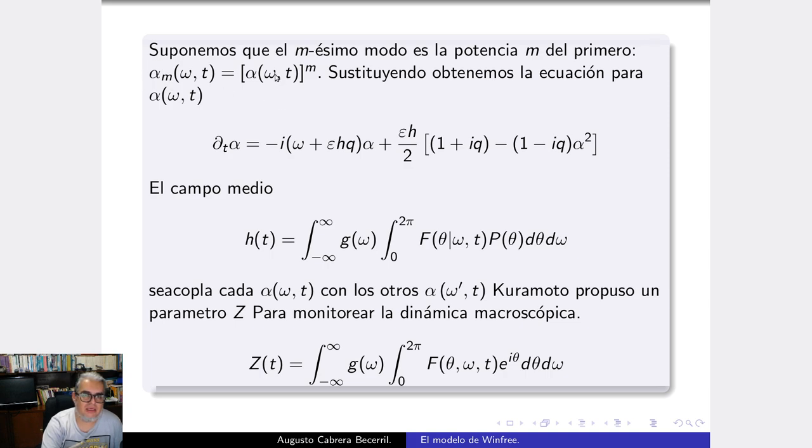Típicamente la f de θ dada W, Q y t va a ser 1 sobre 2π por 1 más la suma desde que m es igual a 1 hasta infinito de αₘ de ωt e a la imθ más algunos términos más pequeños. Estas alfas tienen que ver con el m-ésimo modo de la curva de respuesta. El m-ésimo modo es la potencia m, m-ésimo del primero. Entonces, αₘ es α de ωt a la m. Si derivamos respecto de t a la α, vamos a tener menos i por ω más εhq por α, más εh sobre 2 por 1 más iq menos 1 menos iq por α cuadrado.